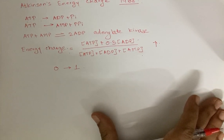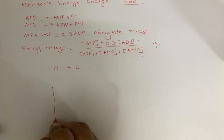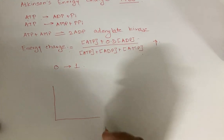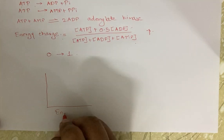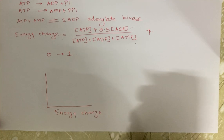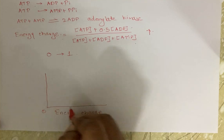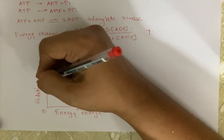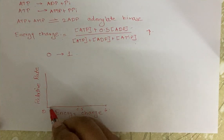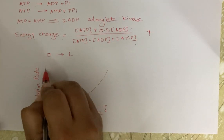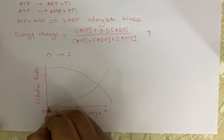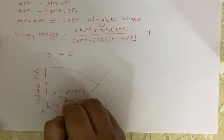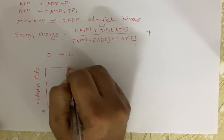Let us draw a graph to understand this. The x-axis represents energy charge, ranging from 0 to 1, with 0.5 at the midpoint. The y-axis represents the relative rate of particular enzymes. One line represents the ATP-utilizing pathway, and another line represents the ATP-generating pathway.